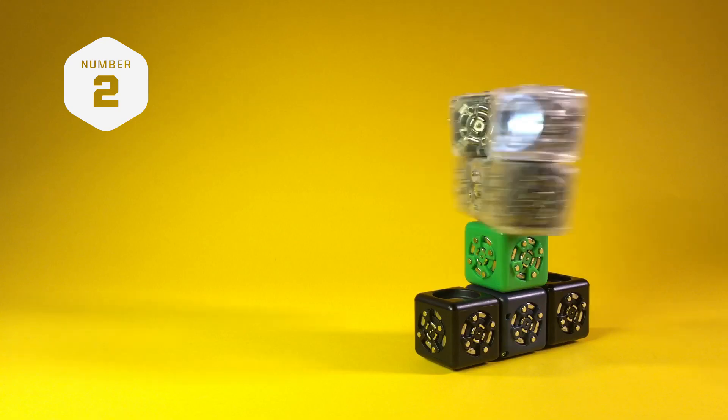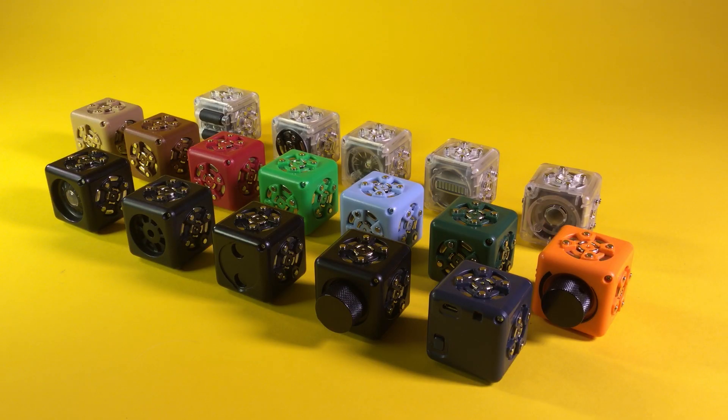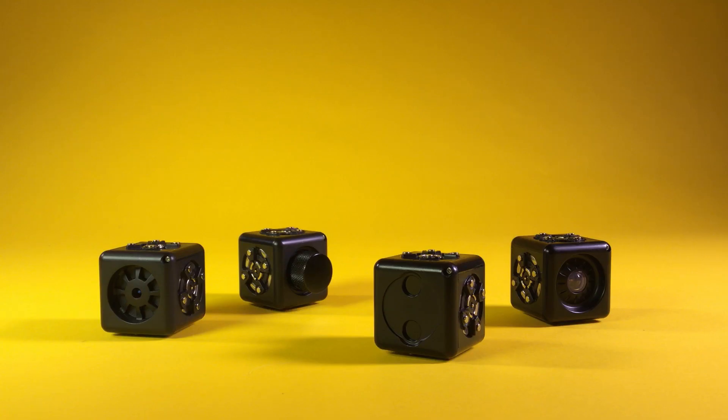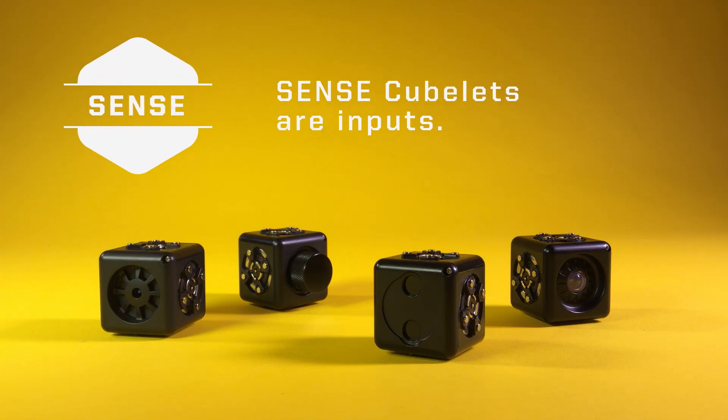Number 2. Each type of cubelet plays a specific role within a robot. Black cubelets are called sense cubelets and they are inputs. They take in information like light, distance and temperature.